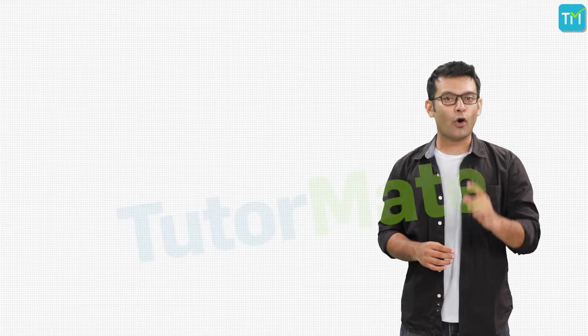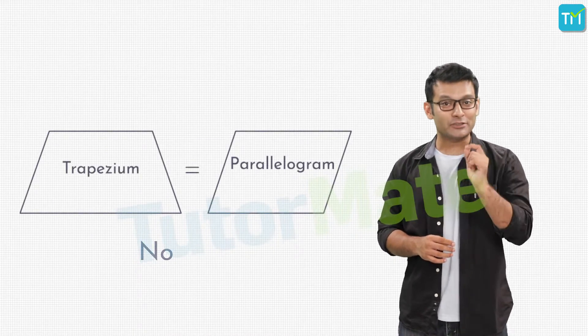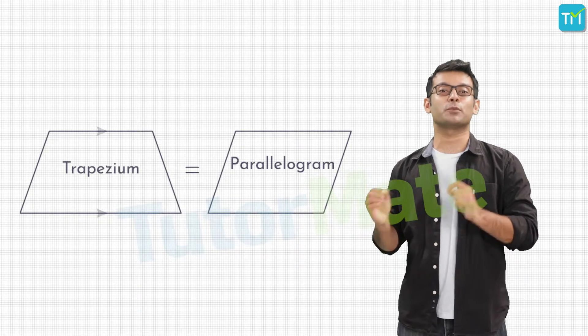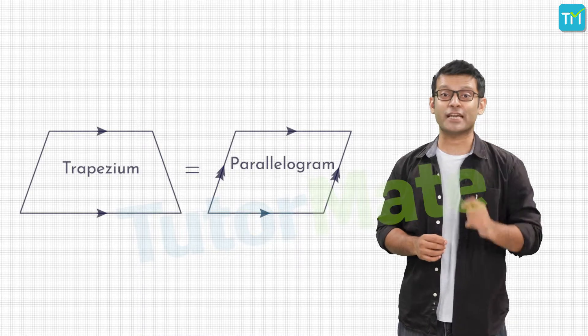Similarly, can we call a trapezium a parallelogram? No, right? Because in a trapezium, only one pair of the opposite sides is parallel. But in a parallelogram, both sides need to be parallel.